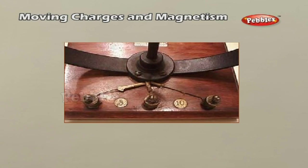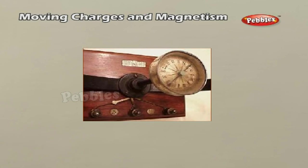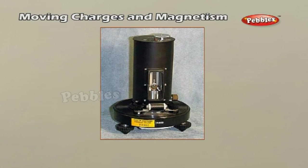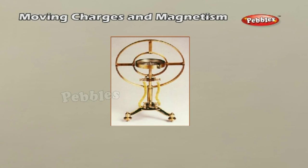Phosphor bronze hairspring connects the galvanometer needle with the coil. Phosphor bronze is used because it provides the least counter torque per unit deflection, increasing the sensitivity of the galvanometer. The cylindrical soft iron core has very high magnetic permeability and attracts a large number of magnetic lines of force towards itself, increasing the magnetic field on the coil and the torque, resulting in increased sensitivity of the galvanometer.